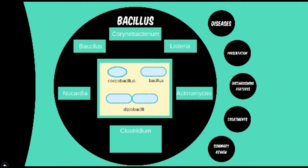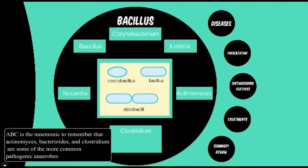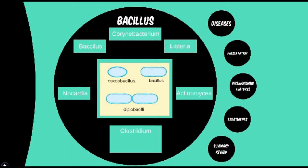Actinomyces and clostridium species also fall under the ABC anaerobes group. The '-myces' suffix is a bit of a misnomer since this means fungus in Latin, which can throw off students at first — we'll see this term used more in the mycology section. The most important differentiating factor in clostridium species is the fact that they are spore-forming, allowing them to survive in places other bacteria wouldn't. This hibernation-like state makes them very rugged, and it is not uncommon to find certain species surviving in soil.